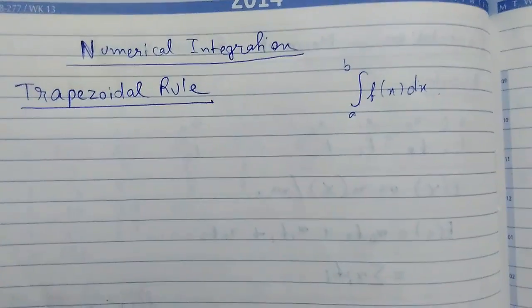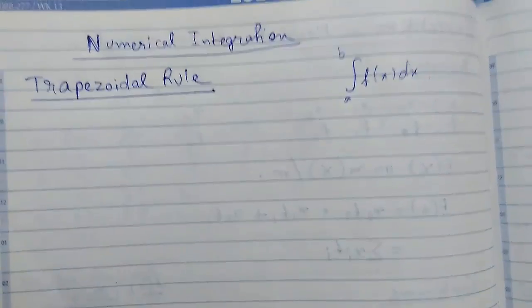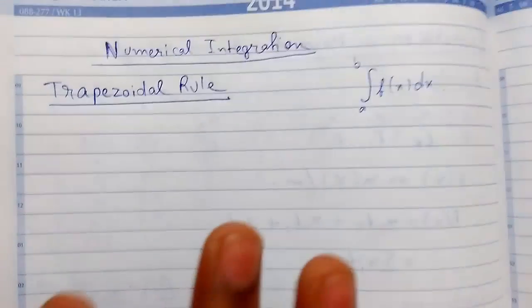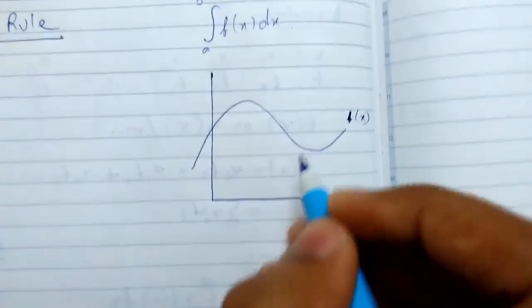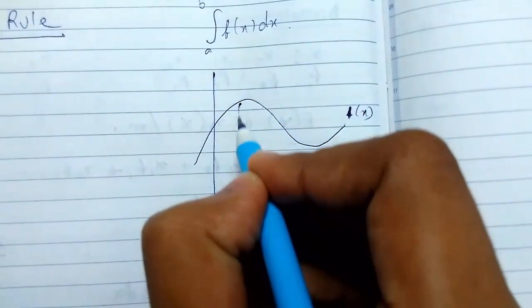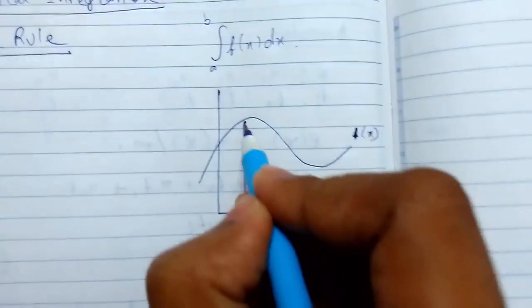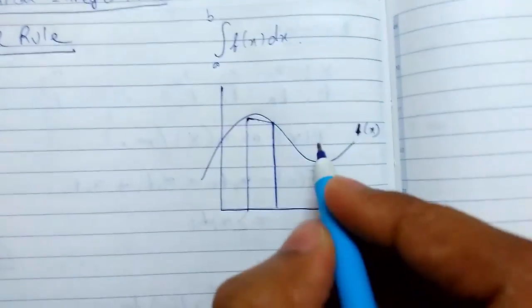This can be done by using linear approximations on the function f. The trapezoidal method works like this: suppose we have a function f(x). We'll be drawing trapeziums.